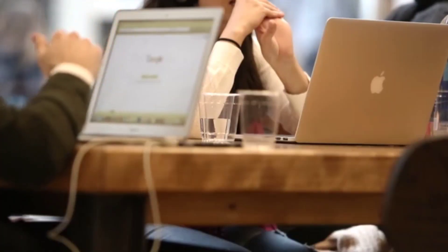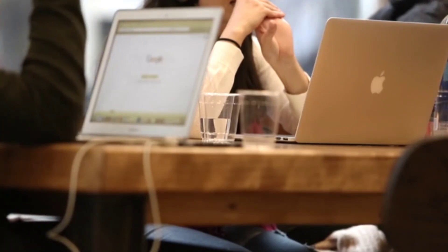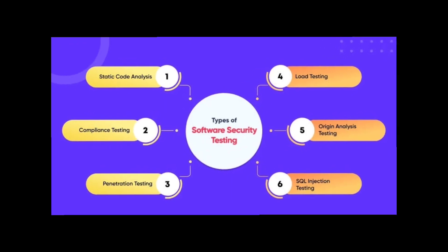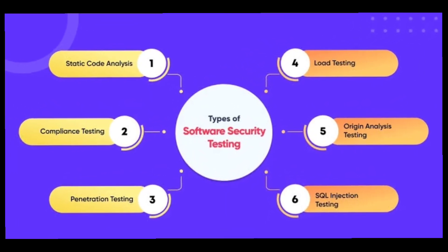We will discuss security testing. In general, we have different kinds of testing teams: functional testing, performance testing, and security testing. We have roles and responsibilities for each. Now we will look at the types of security testing one by one.